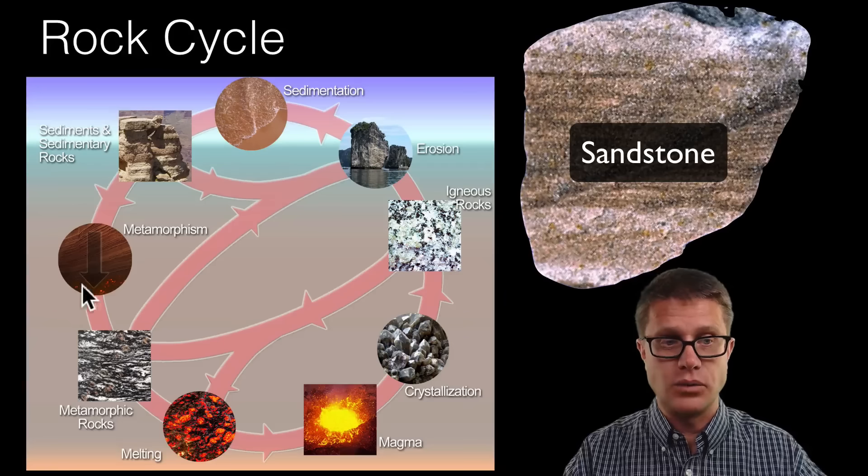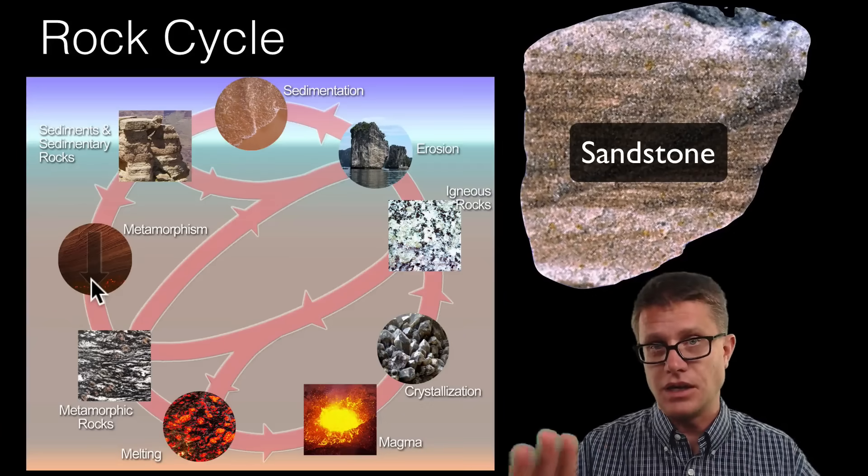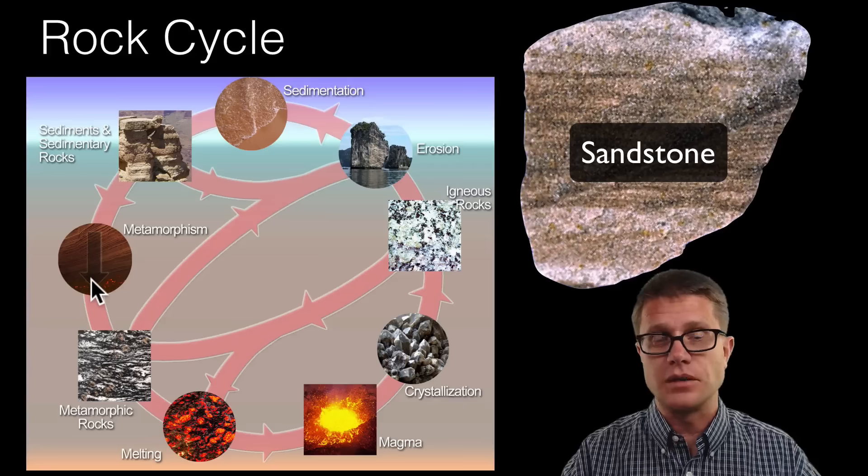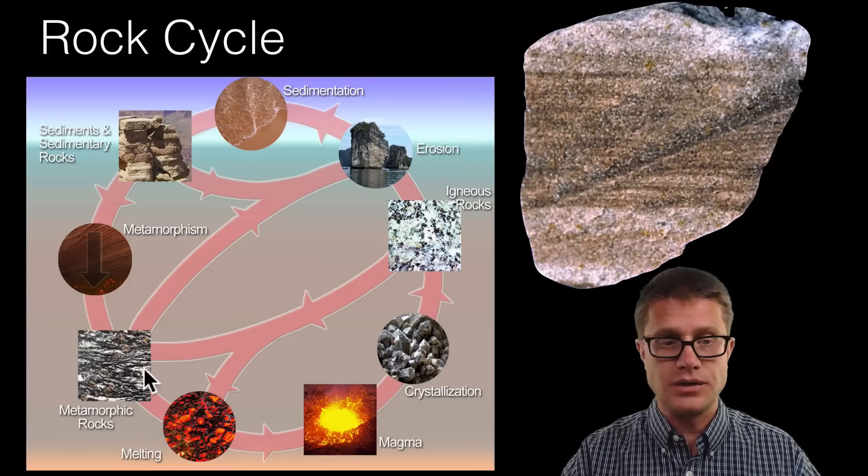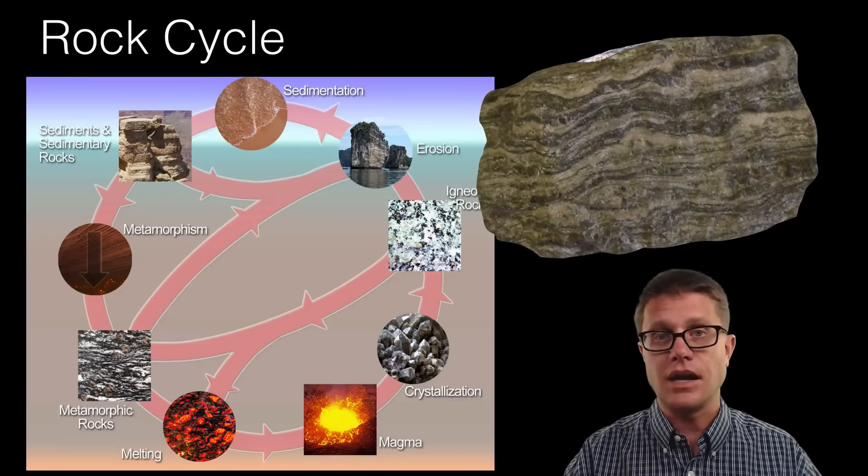Now that could be squeezed. We could squeeze it under the surface of the earth using heat and pressure. It could form something like quartzite. Or we could take that igneous and we could squeeze it and make something like gneiss.